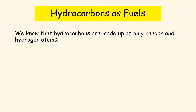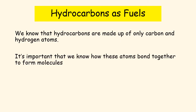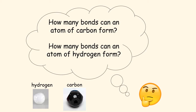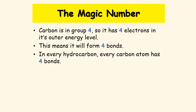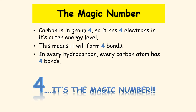Hydrocarbons are made up of only carbon and hydrogen atoms, and it is important that we know how these atoms bond together to form molecules. Can you remember how many bonds an atom of carbon can form and how many bonds an atom of hydrogen can form? Carbon is in group four — it has four electrons in its outer energy shell, which means it will form four bonds. The four bonds that carbon forms are covalent bonds, so in each hydrocarbon, each carbon atom forms four bonds. Four is the magic number.